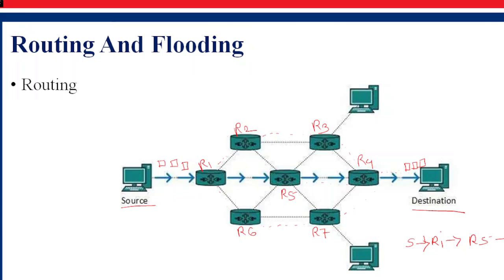When using routing, there is only one dedicated path — our data from one source is transmitted on only one route. The route data packets use the optimal path. Because we are using one optimal path, there is very less traffic. This process is not the most reliable, but since only one optimal path is used, there is no chance of duplicate packets arriving at the destination.